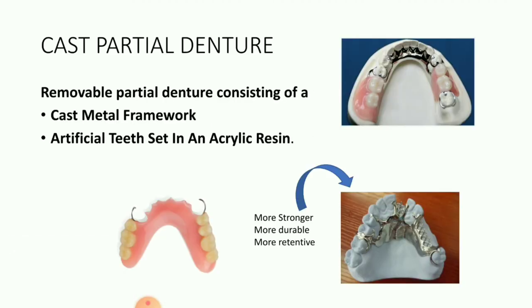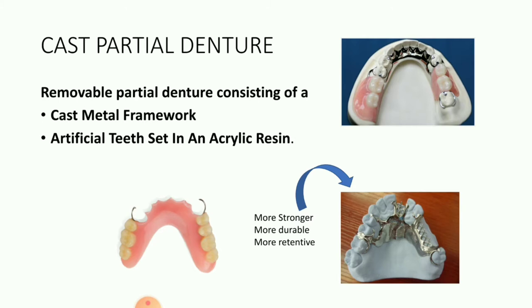Cast partial denture is basically a removable partial denture consisting of a cast metal framework and artificial teeth set in an acrylic resin. In addition to the acrylic partial denture, the cast partial denture has a cast metal framework, and over this framework there is an acrylic resin over which the artificial teeth are set. Comparing the cast partial denture with the acrylic partial denture, since the cast partial denture has a metal framework, they are obviously more stronger, more durable, and more retentive.